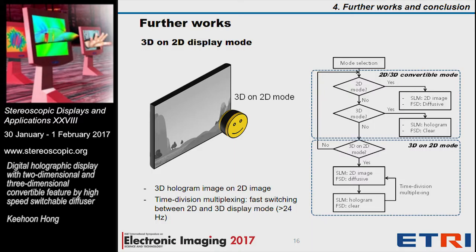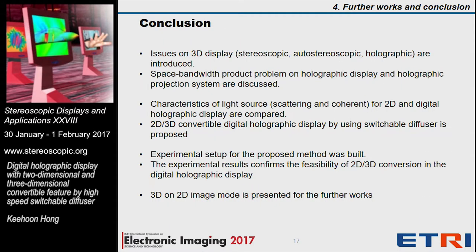If that is implemented, the whole system can select the 2D, 3D, or simultaneous mode as described in the flow chart. In conclusion, issues on 3D display and space bandwidth product problems were introduced. For the proposed method, characteristics of light source for 2D and 3D display were compared, and 2D and 3D conversion based on digital holographic display was proposed. Experimental results were shown for the feasibility test, and 3D on 2D image mode was discussed for future works. Thank you for your attention.